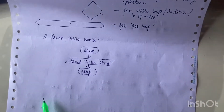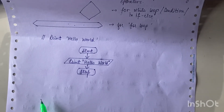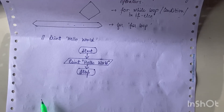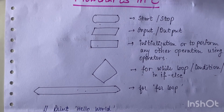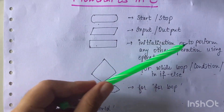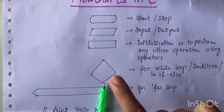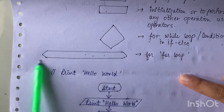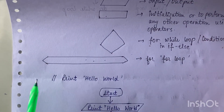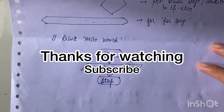In the next video I will discuss loops in flowcharts, which will give you a clear idea of how to use for loop and while loop in flowcharts. To recap: the oval block is for start and stop, the parallelogram is for input and output, the rectangle is for initialization or any operation using operators, the rhombus is for conditions in if-else and while loops, and for the for loop the initialization, condition, and update come in one block. We'll discuss for loop and while loop in detail in the coming videos.